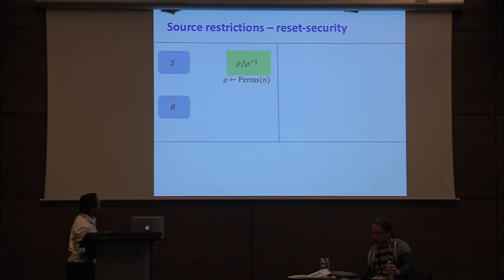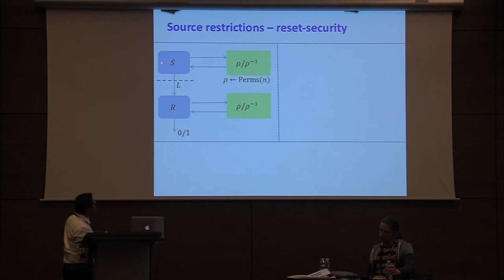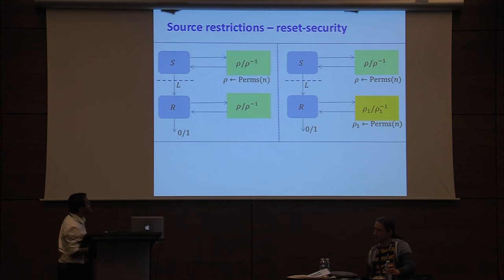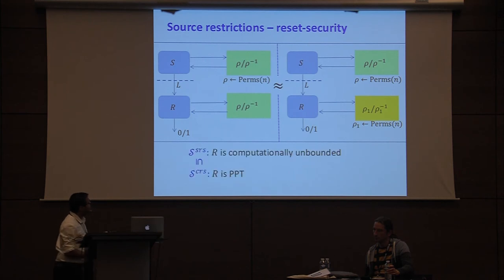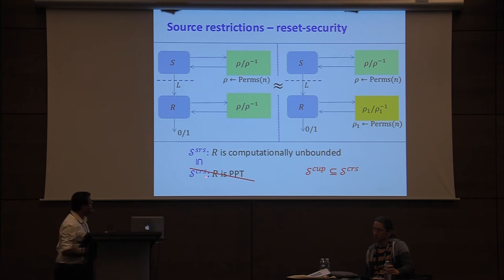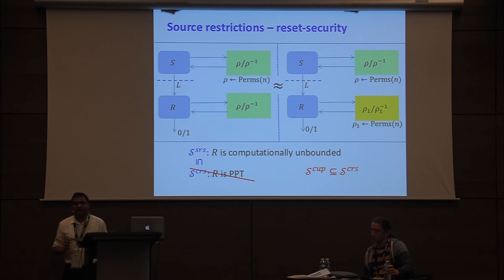Reset security is an indistinguishability-based notion where in the first world the source and the reset adversary are interacting with the same random permutation rho and rho-inverse, and in the other case the source and reset adversary interact with independent random permutations rho and rho_1. We say S is reset secure if these two worlds are indistinguishable in the eyes of R. As before there are two notions depending on whether R is bounded or unbounded. Since computationally unpredictable sources are a subset of computationally reset secure sources, the computational notion does not make sense, so I focus on PSPRP security for statistically reset sources.